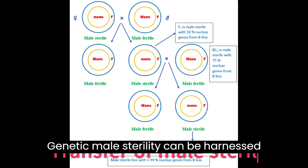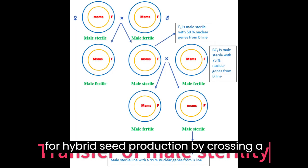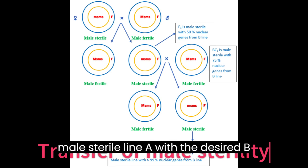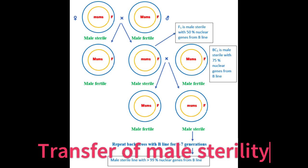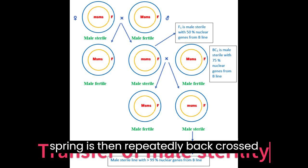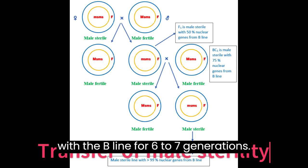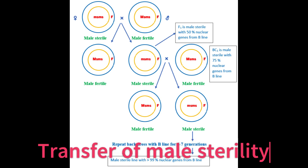Genetic male sterility can be harnessed for hybrid seed production by crossing a male sterile line A with the desired B line. The resulting F1 offspring are then repeatedly back-crossed with the B line for 6 to 7 generations.